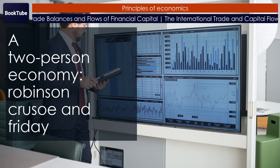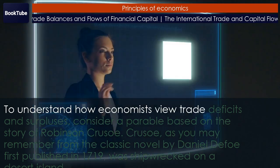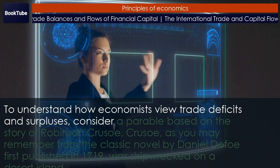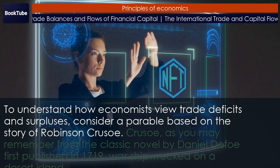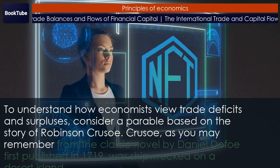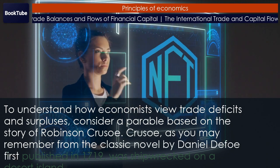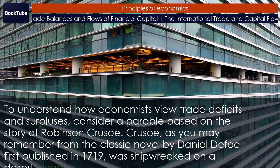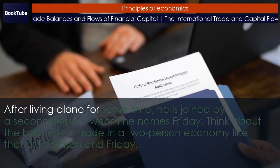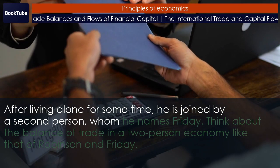A two-person economy: Robinson Crusoe and Friday. To understand how economists view trade deficits and surpluses, consider a parable based on the story of Robinson Crusoe. Crusoe, as you may remember from the classic novel by Daniel Defoe first published in 1719, was shipwrecked on a desert island. After living alone for some time, he is joined by a second person, whom he names Friday.